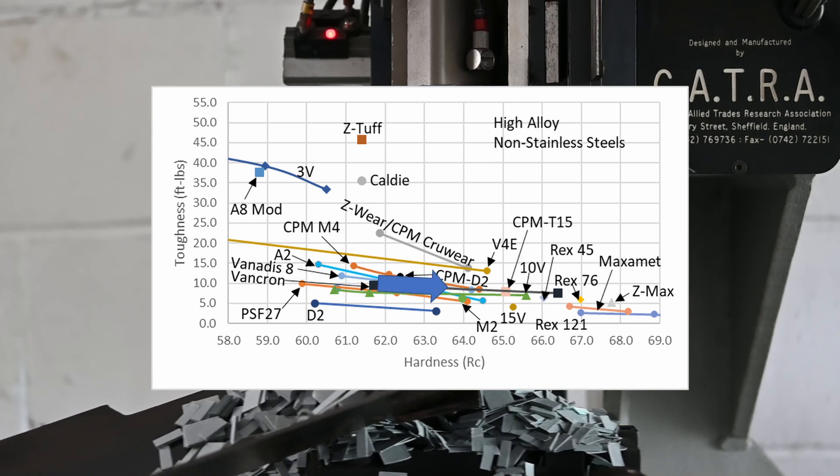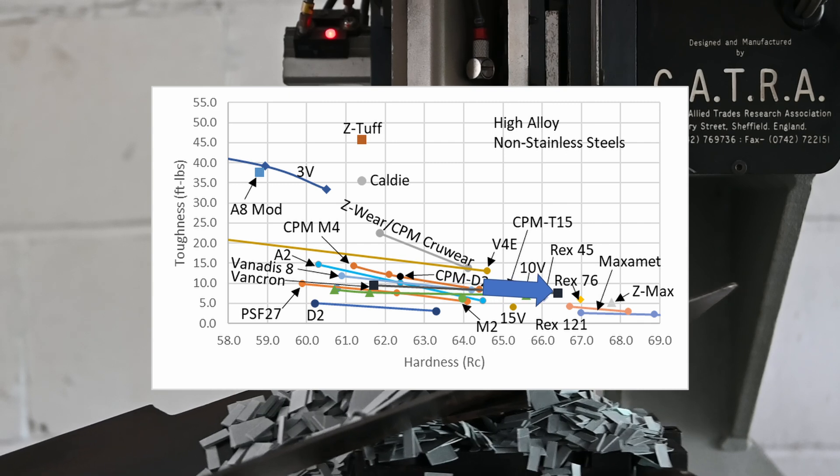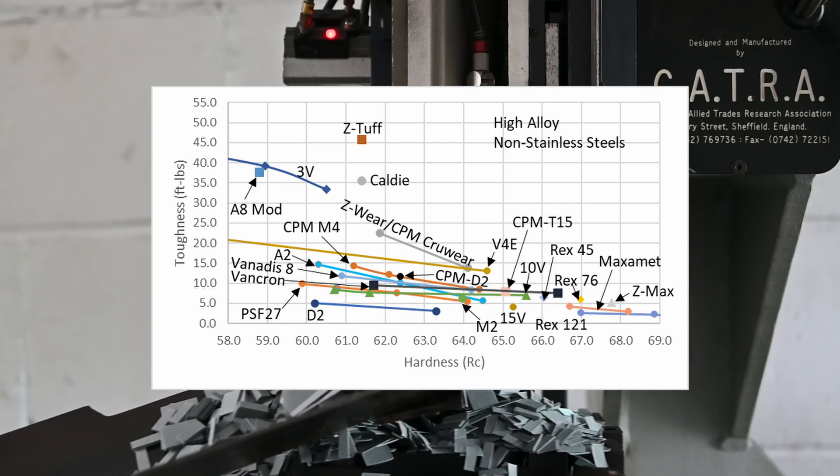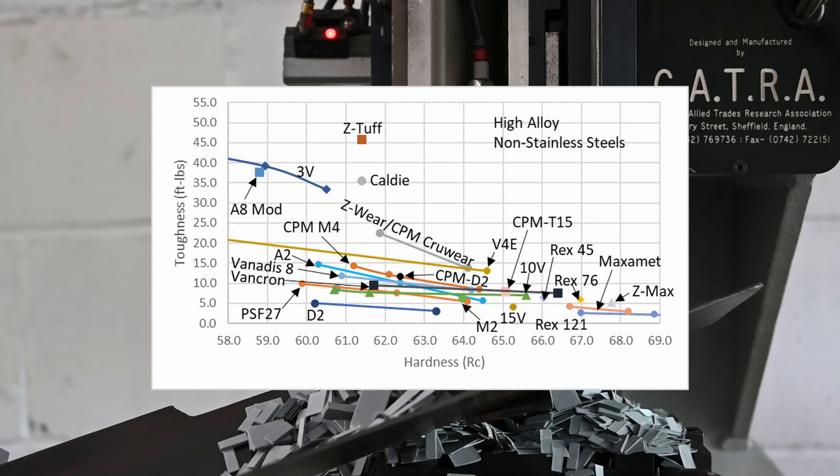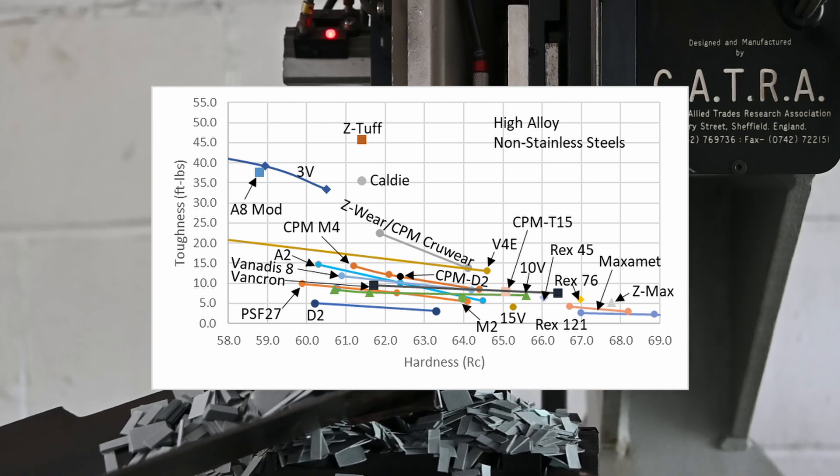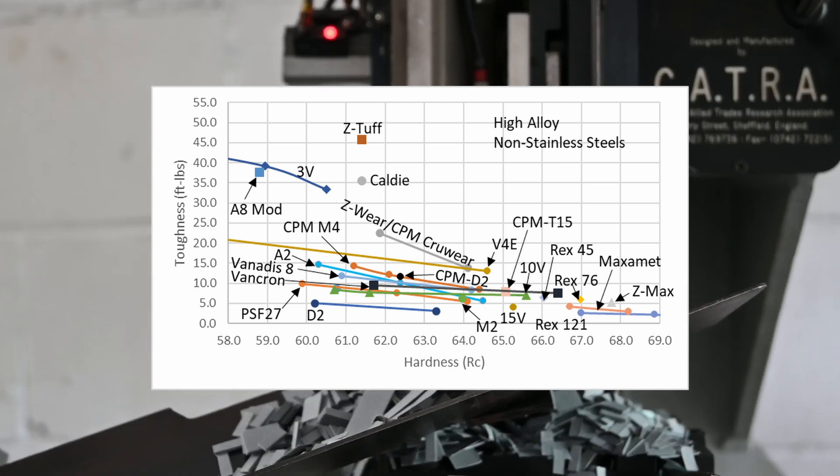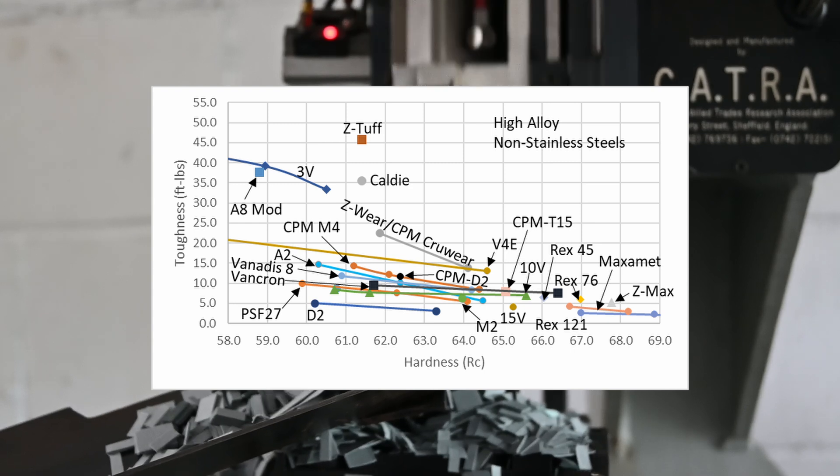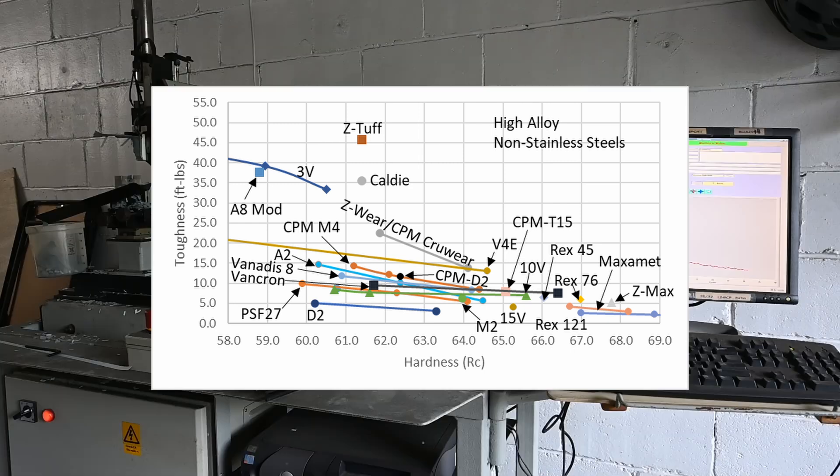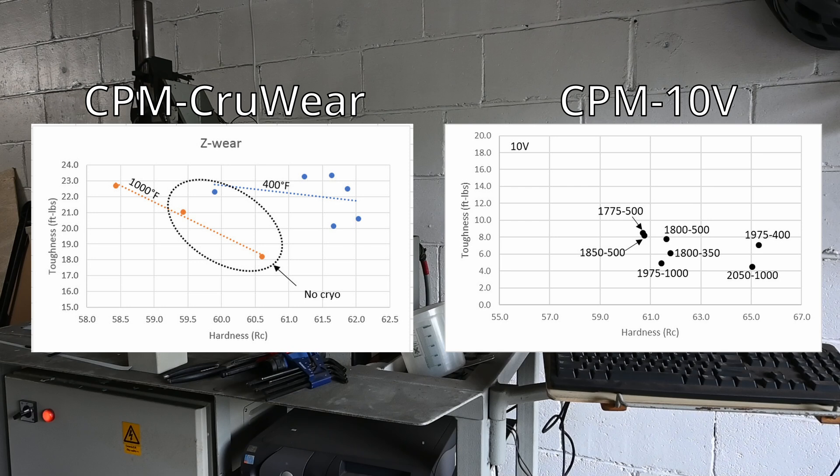The toughness change with hardness was very flat with VANCRON. I don't know if this is an inherent property to VANCRON, or if it was because I did a high temper of 1000 degrees for the low hardness, and a low temper of 350 for the high hardness. Tempering at 1000 degrees is the recommendation by Uddeholm, but I have found for some other steels like CPM-CruWear and CPM-10V that a low temper can lead to superior toughness for a given hardness. So that very well may be what happened here as well.